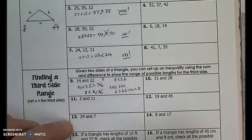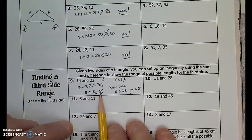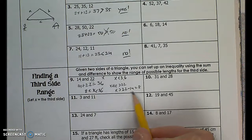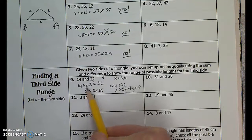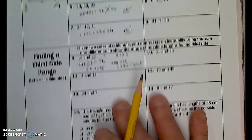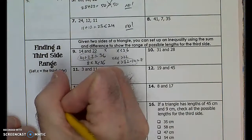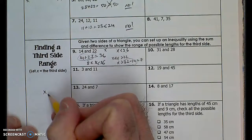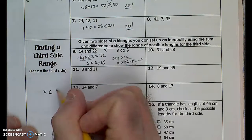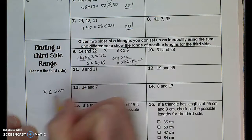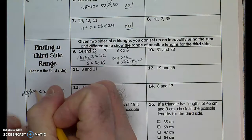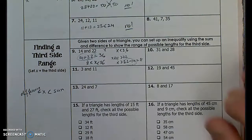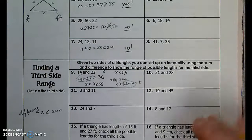So x has to be greater than 8 and less than 36 — greater than the difference and less than the sum. That's going to be our rule: the missing side x is going to be less than the sum and greater than the difference. We can apply that rule every single time using the same logic.